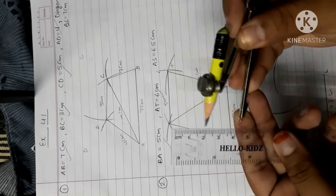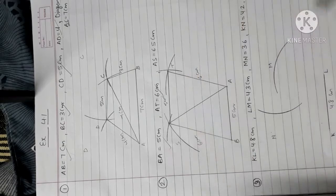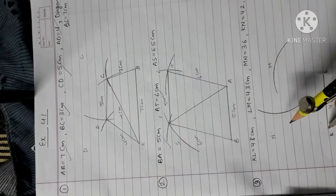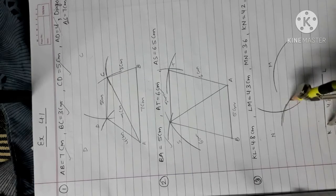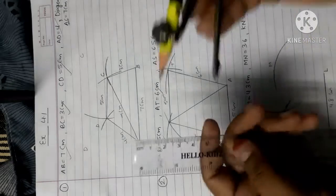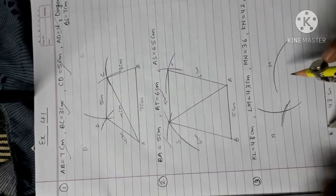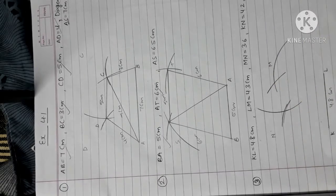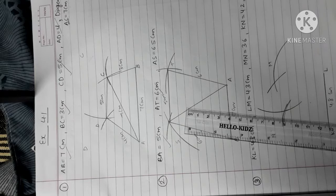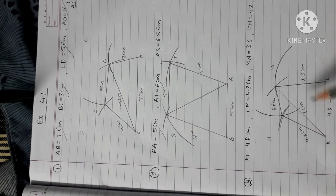M to N equals to 3.6 cm. Then K to N equals to 4.2 cm — open your compass to 4.2 cm and cut from K to N. And diagonal K to M — that means from K to M, the diagonal is 6 cm. So open your compass to 6 cm, take it and cut it. Now join all the lines by using your scale and write down all the measurements.